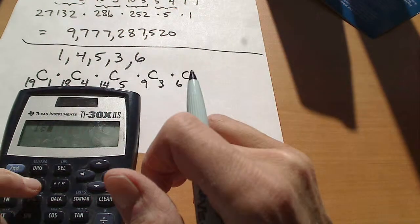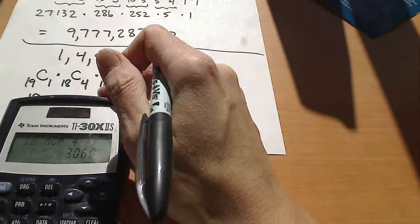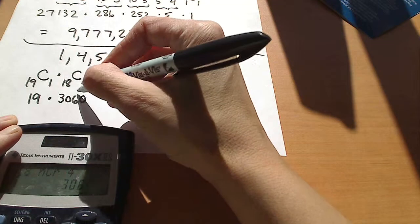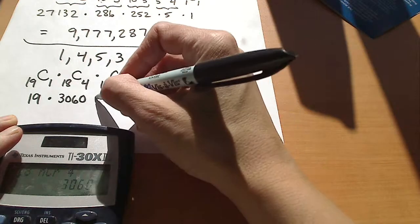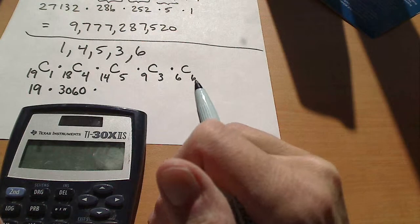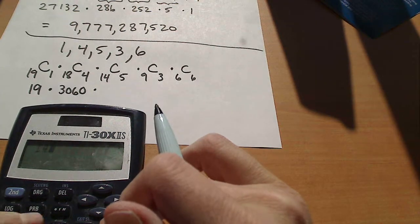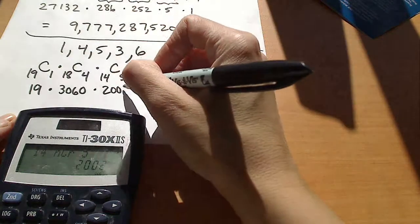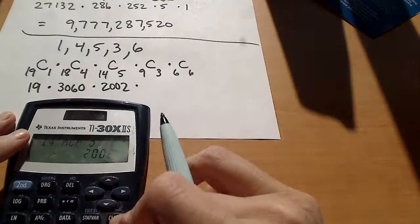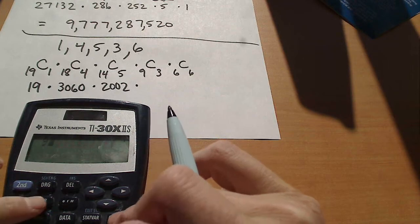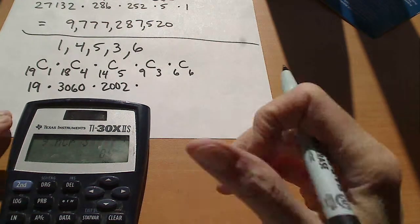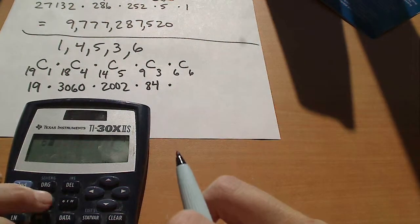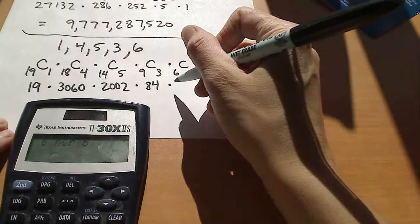Let's do 18 taken 4 at a time. So this is 3060. That's this combination. 18 taken 4 is 3060. And then 14 taken 5. So 2,002. And then 9 taken 3. And that's 84. And then 6 taken 6 is 1.